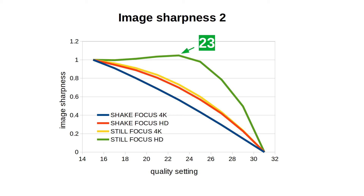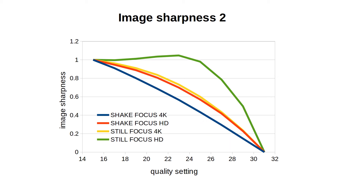The still HD line has a maximum at quality setting 23, which coincidentally is the default video quality rendering setting for many video editors — I think we just discovered why this is the case. The 4K video with shaking shows a straight line, so if you have a large format video with moving objects, every step in the direction of making the video quality setting better will improve your video in a linear fashion. This is not so true for HD and calm videos.